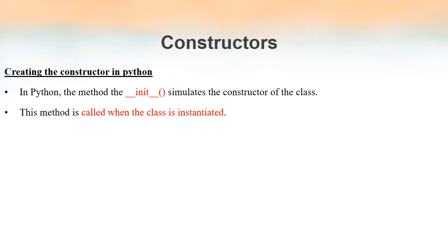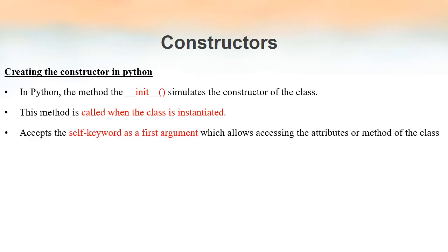Whenever we create an instance — that process is known as instantiation — we are creating an instance, that is an object of a class. It is at that point this method gets executed. This method accepts the `self` keyword as its first argument. `self` is the first parameter of the `__init__` method, and using this argument we can access the attributes or methods inside that class.